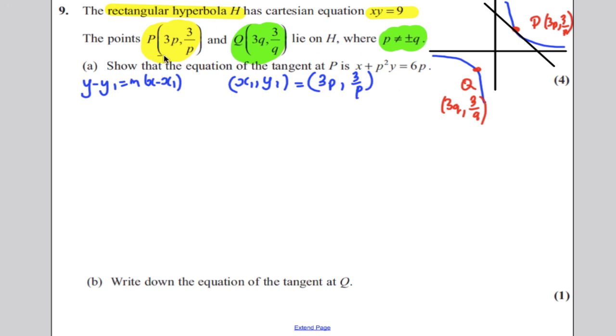The thing we really need to find out is the m, the gradient here. And we're going to do that by differentiating the curve, working out the gradient of the tangent at that point. So, we have that xy is equal to 9. Let's make y the subject. y is therefore 9 divided by x,